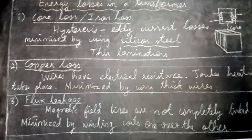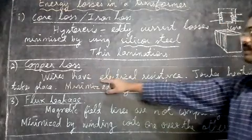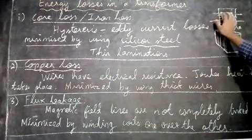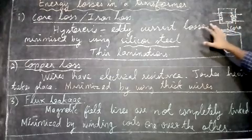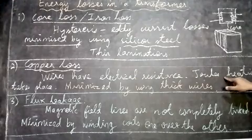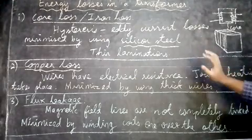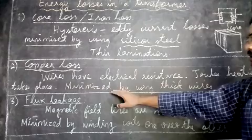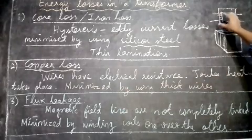The second is copper loss. The wires have electrical resistance, and due to Joule's heating, there will be wastage of energy. This can be minimized by using thick wires in the primary and secondary to reduce the copper loss.